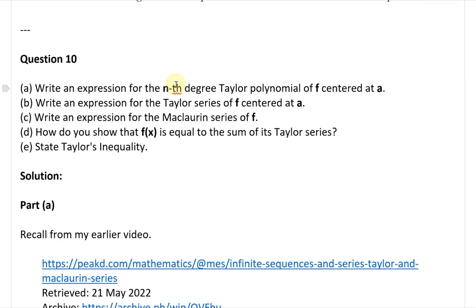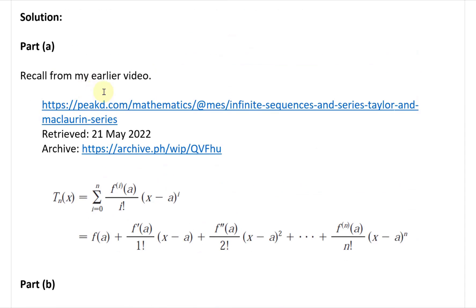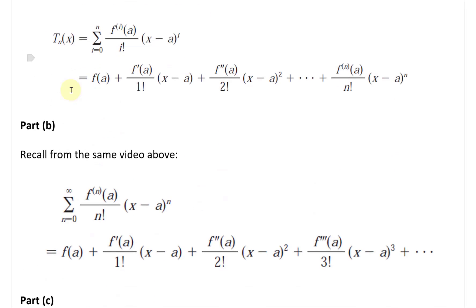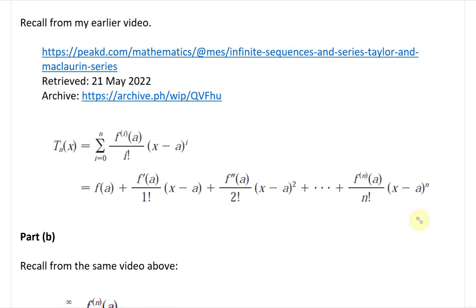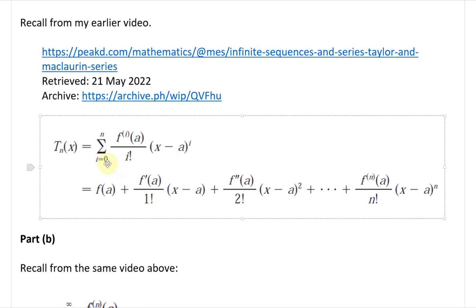Now let's look at the solution. For part A, recall from my earlier video on Taylor and Maclaurin series. The nth degree Taylor polynomial T sub N of X is equal to the summation from i equals 0 to N of the i-th derivative at A, divided by i factorial, times x minus A to the power of i.